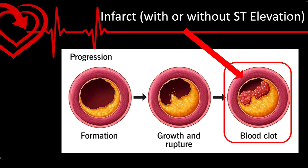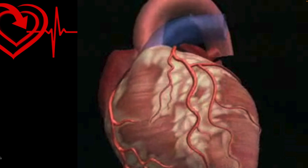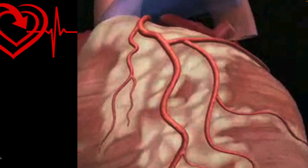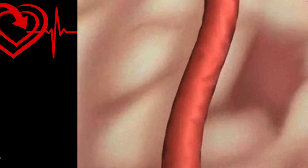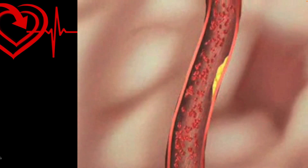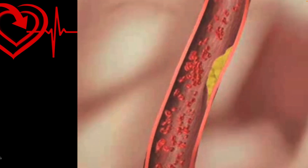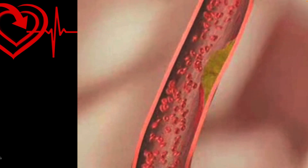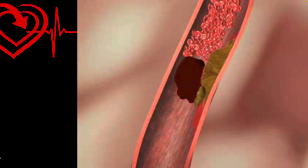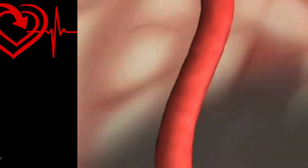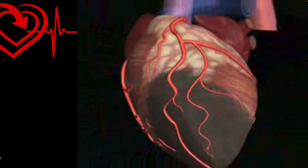A heart attack occurs when the plaque ruptures, causing a blood clot to form, partially or completely blocking flow to a region of the heart. This results in injury or death to cardiac muscle cells downstream from the obstruction. The darkened area represents dead cardiac tissue that prevents normal muscle function and therefore decreases cardiac output.